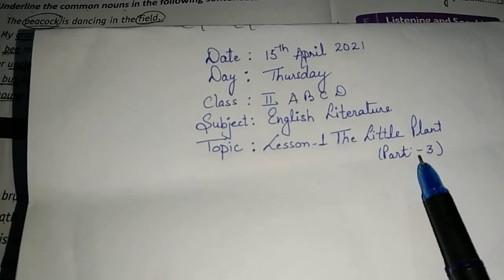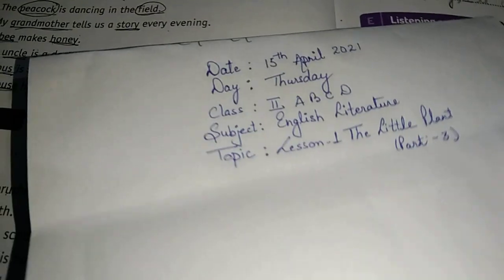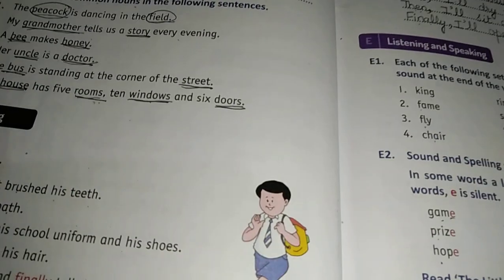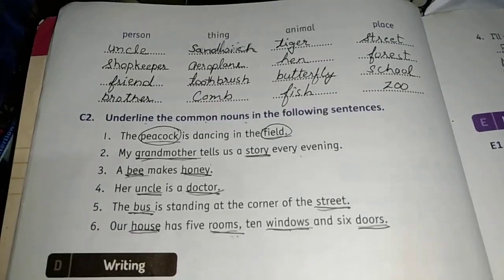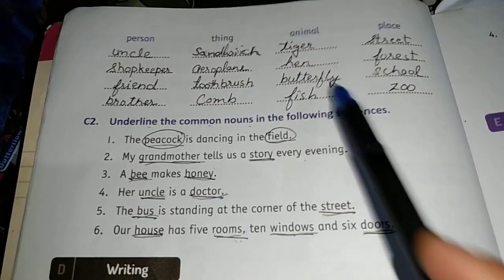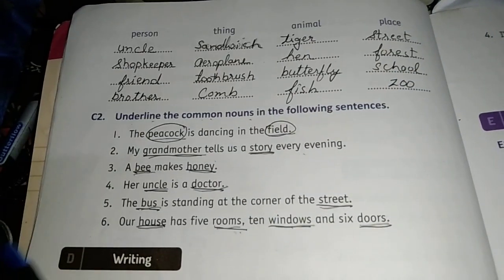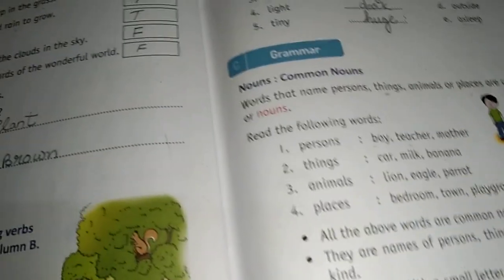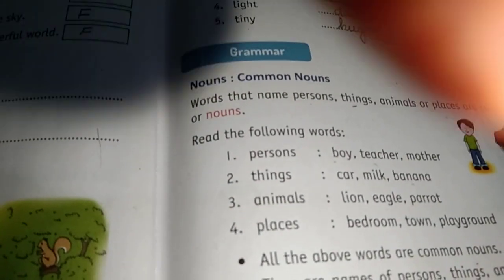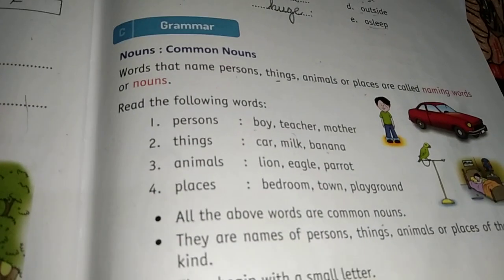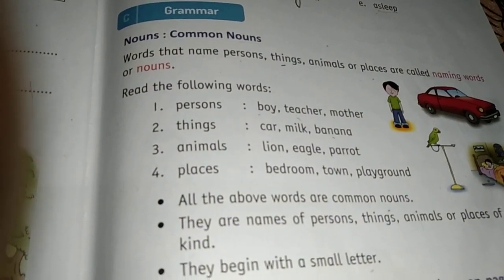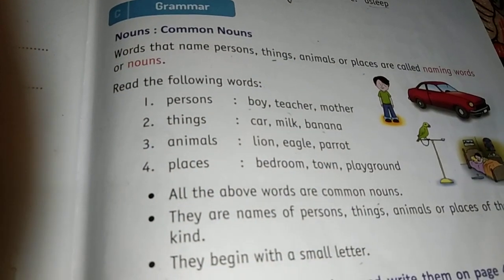This is Part Three and the last part of the lesson. In Part Two we had completed the exercise that was based on common nouns. So children, I will repeat: what is a common noun? A common noun is the name of a person, place, animal or thing.